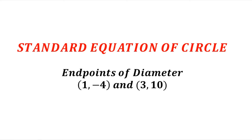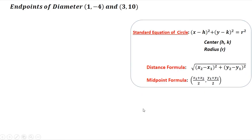Find the standard equation of a circle with endpoints of a diameter at (1, -4) and (3, 10). The formulas we're going to use are the standard equation of a circle with center (h, k), the distance formula to compute the length of the diameter, and the midpoint formula to find the center of the circle.